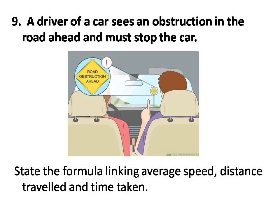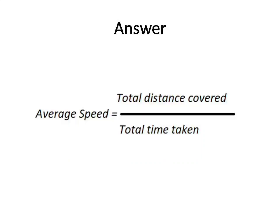Question number nine. A driver of a car sees an obstruction in the road ahead and must stop the car. State the formula linking average speed, distance traveled, and time taken. Answer: average speed equals total distance covered divided by total time.